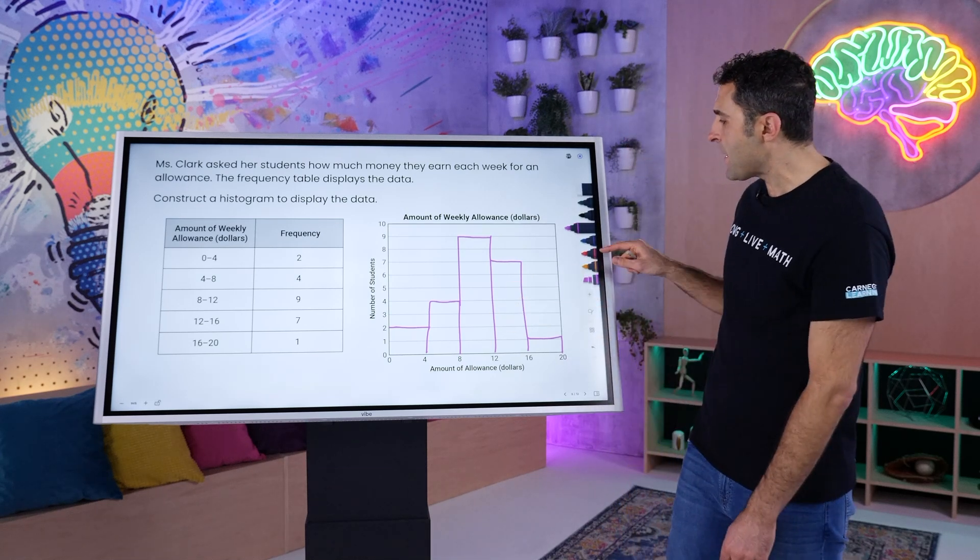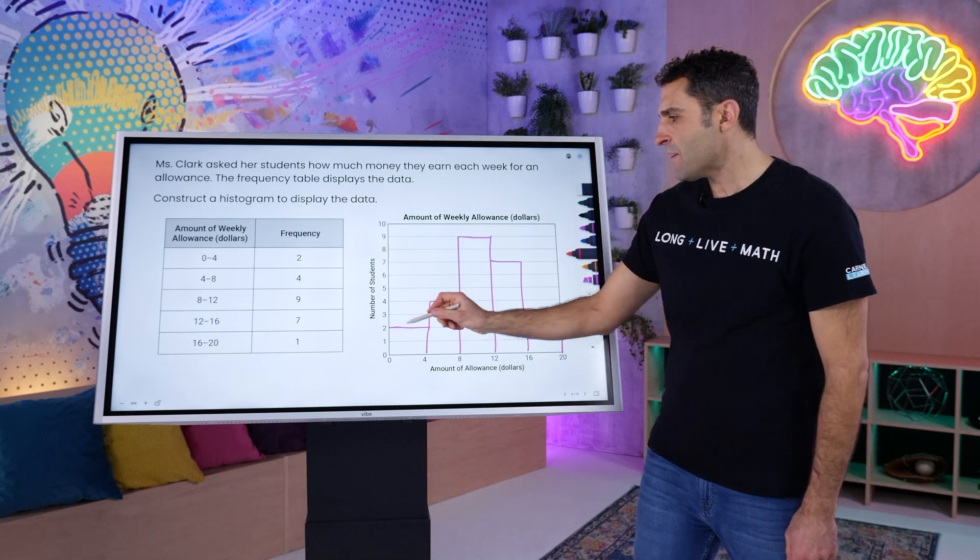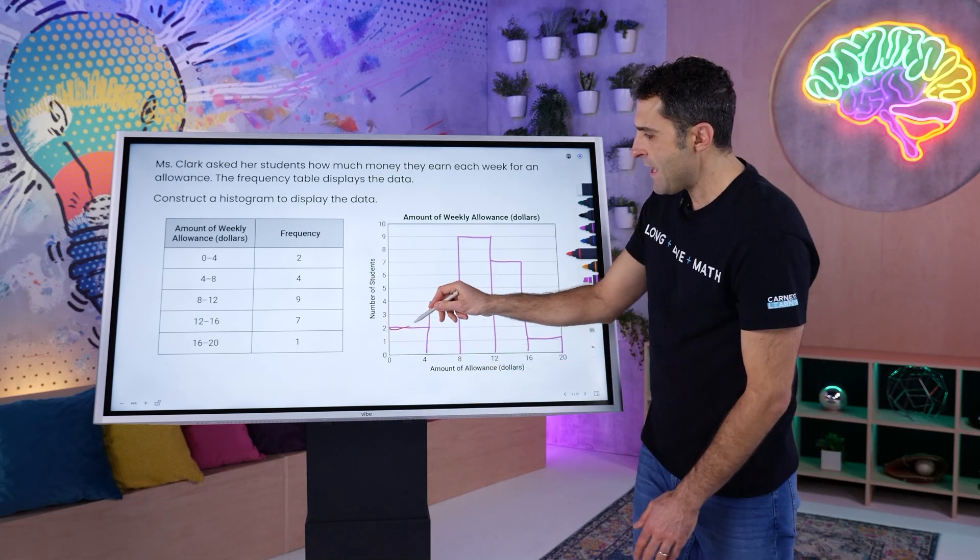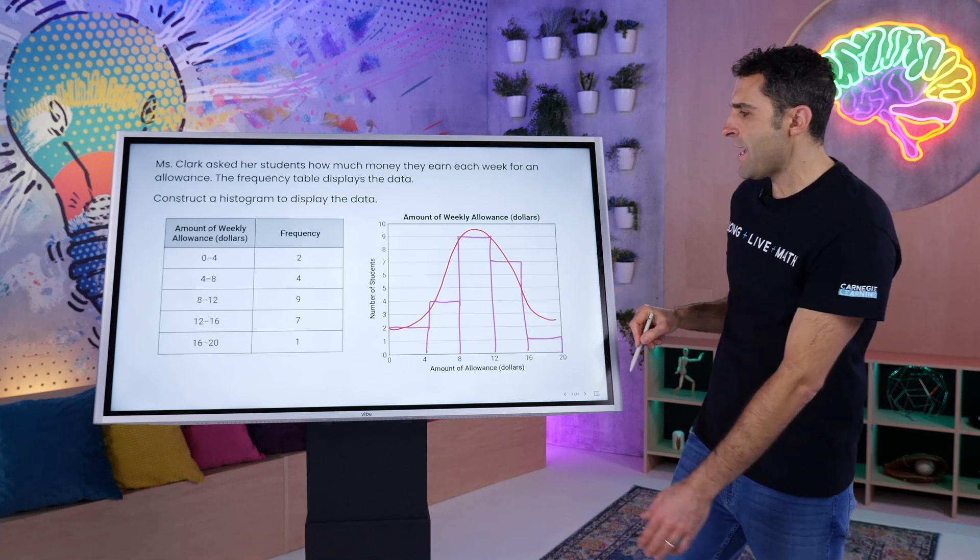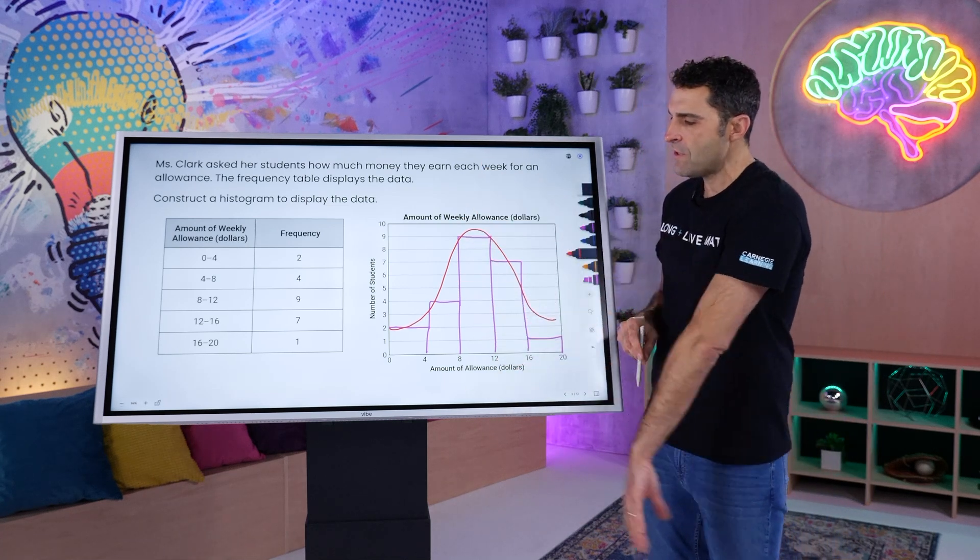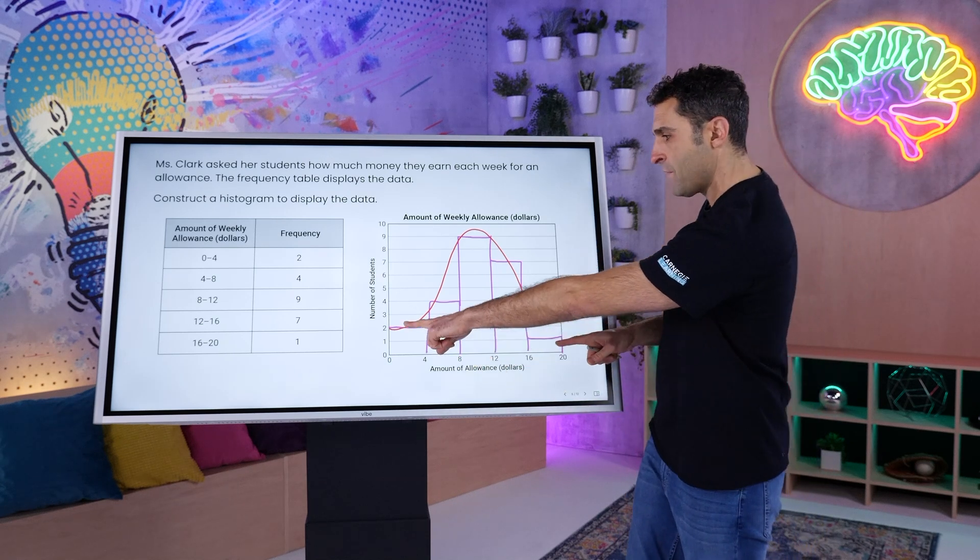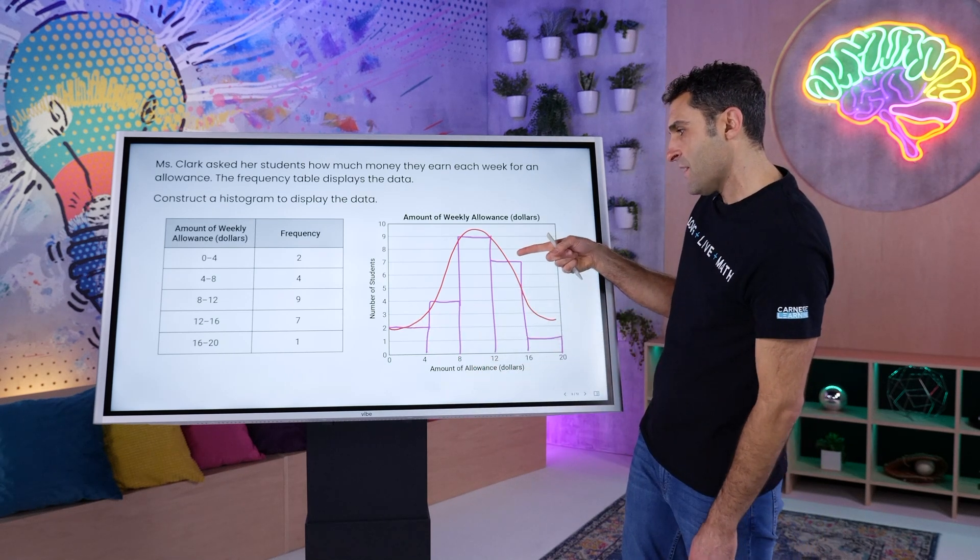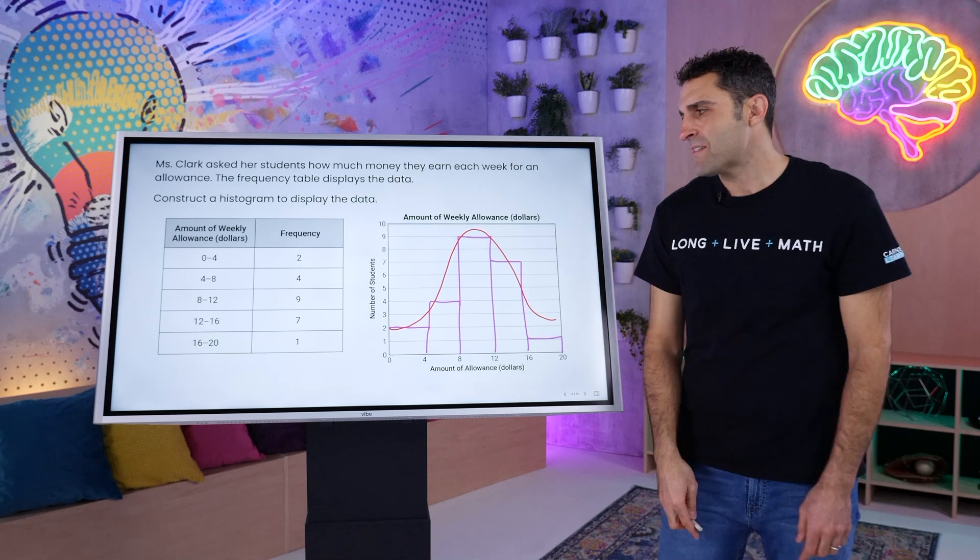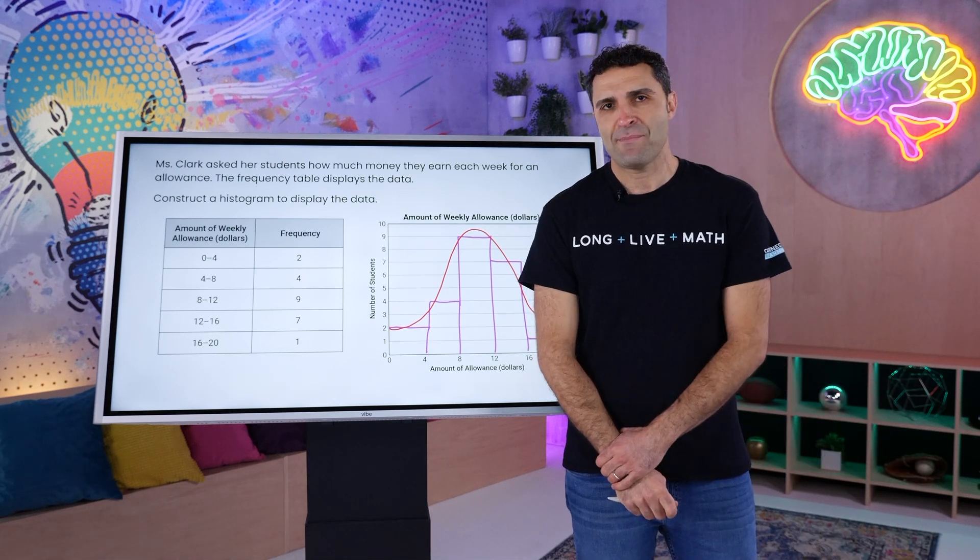Yeah, would you say that this is fairly symmetric, right? You have a tail on the left and you have a tail on the right with a peak in the middle. Yeah, so I would say fairly symmetric, not perfectly symmetric, right? You can see a 1 versus a 2. Over here, you see a 7 versus a 4. But it's on the way to being symmetric.